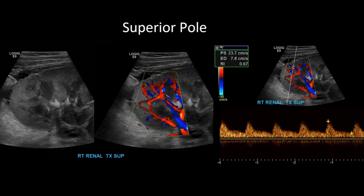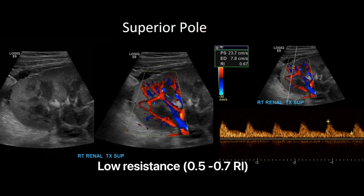Once done evaluating the parenchyma and vasculature with the linear probe, begin Dopplering, starting at the superior pole. I take arcuate artery measurements — though some institutions require segmental, or both segmental and arcuate. Wherever you measure, do superior pole, midsection, and inferior pole. For both the main renal artery and intraparenchymal arteries, you want a low-resistance waveform, short acceleration time under 70 milliseconds, forward flow throughout the cardiac cycle, and a low RI — usually below 0.7. Here the RI is 0.67, which is normal. RI means resistive index.